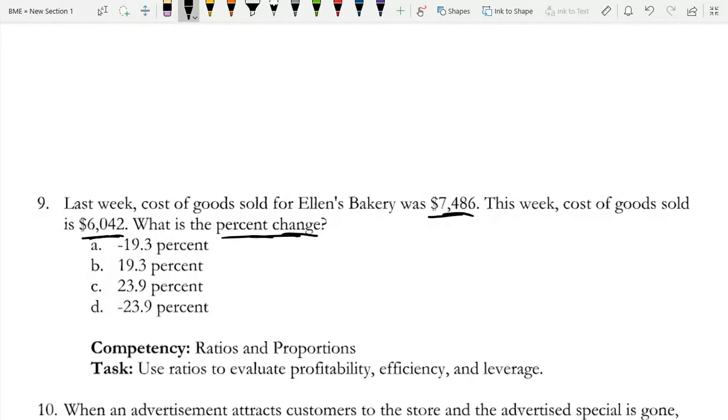Okay, so to find the percent change, what you'd first do is find the deviation in price in the cost of goods. So $7,486 and $6,042. So you would do $7,486 minus $6,042 to find the difference.